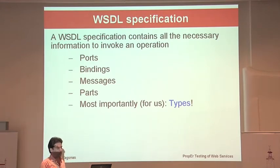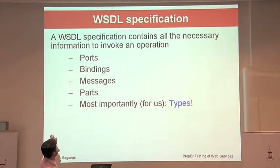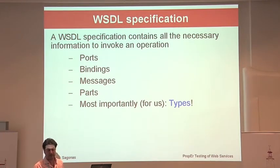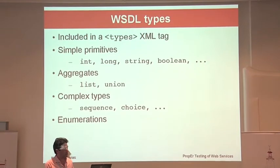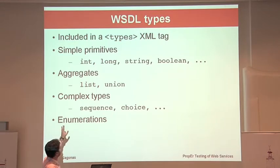A WSDL specification contains all necessary information to invoke an operation: ports, bindings, messages, and parts. Most importantly for us, it contains the types the web service handles, under an XML types tag. These include primitive types like integers, longs, strings, and booleans; aggregates like lists and unions; and complex types like sequence and choice. The most frequent is the sequence complex type, and there are also enumeration types.